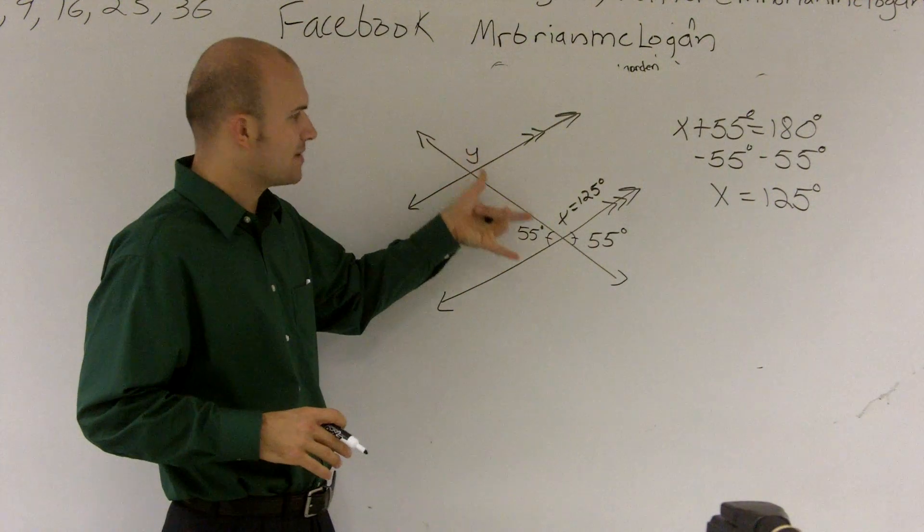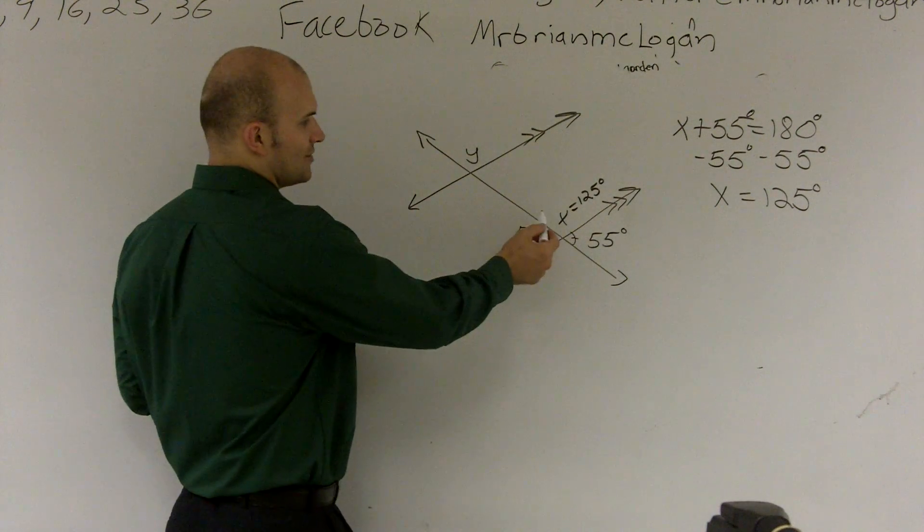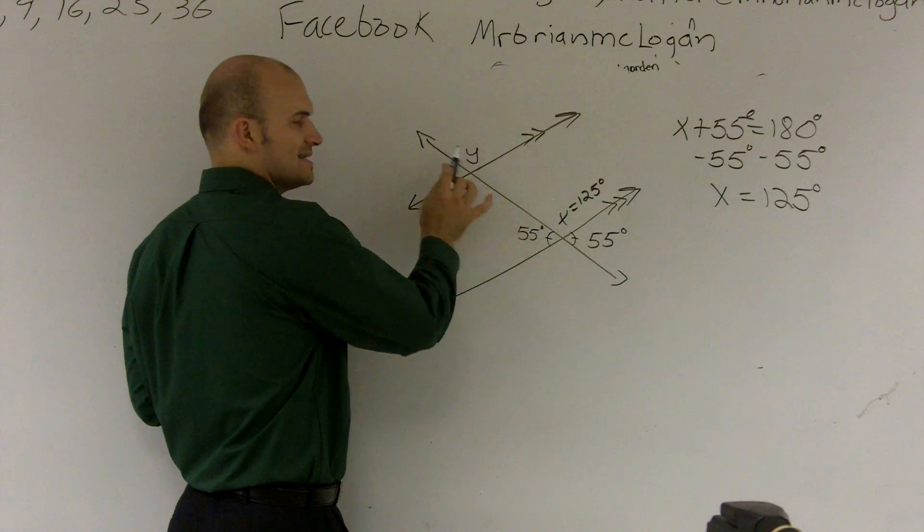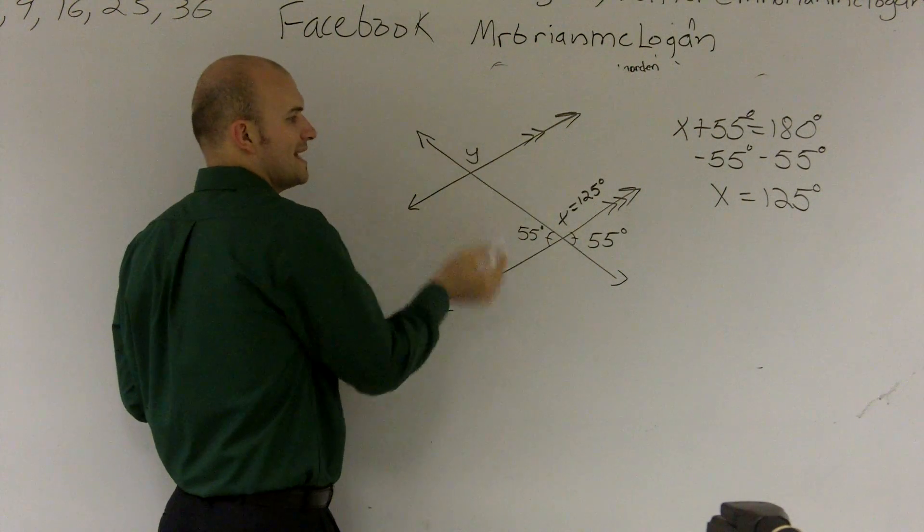And the way that we say corresponding angles is whenever you have parallel lines and transversals, if you kind of look at this, these two angles are both in the exact same position. So therefore, they're also going to be equal. They're what we call corresponding angles.